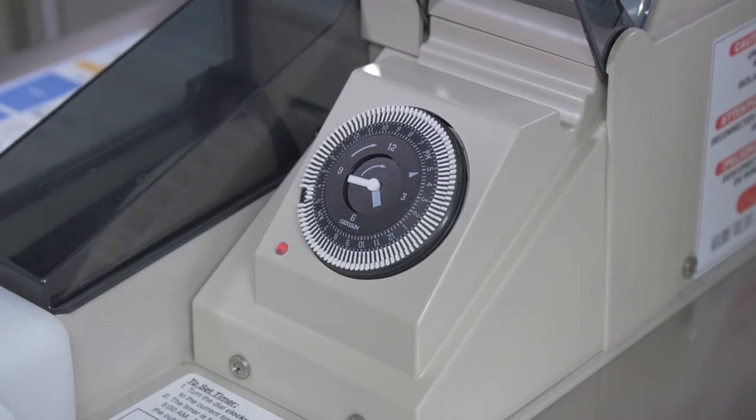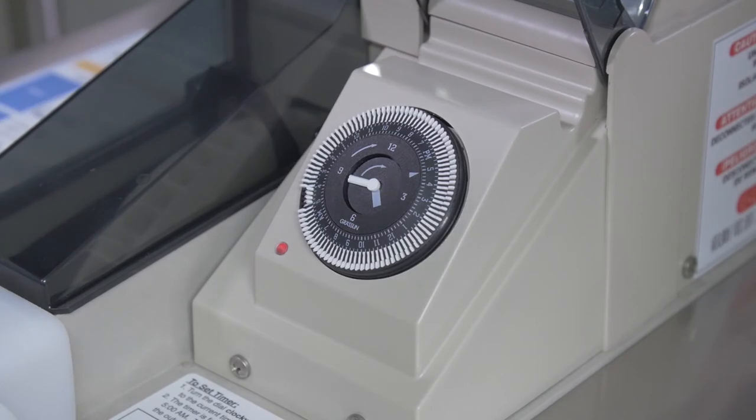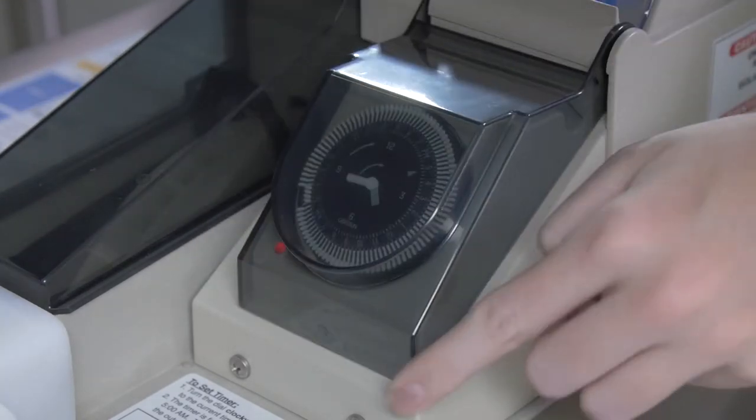If there is only grease in the collector, increase the run time by moving one tab from the outer to inner position. Repeat this process until you find the optimal run time for your kitchen.